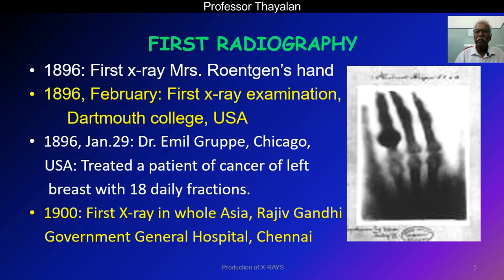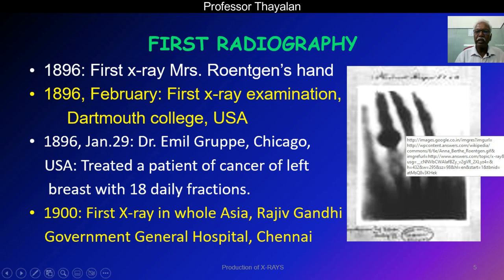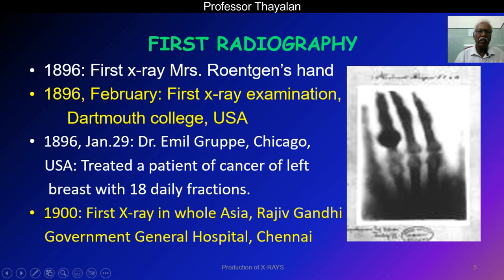The right side image was taken by Röntgen — it is Mrs. Röntgen's hands, the first radiograph taken in 1896. Similarly, the first X-ray examination was conducted in the USA. X-rays were also used in radiotherapy for the treatment of cancer. Dr. Emil Grubbe from Chicago used to treat a patient with 18 daily fractions for cancer of the left breast.